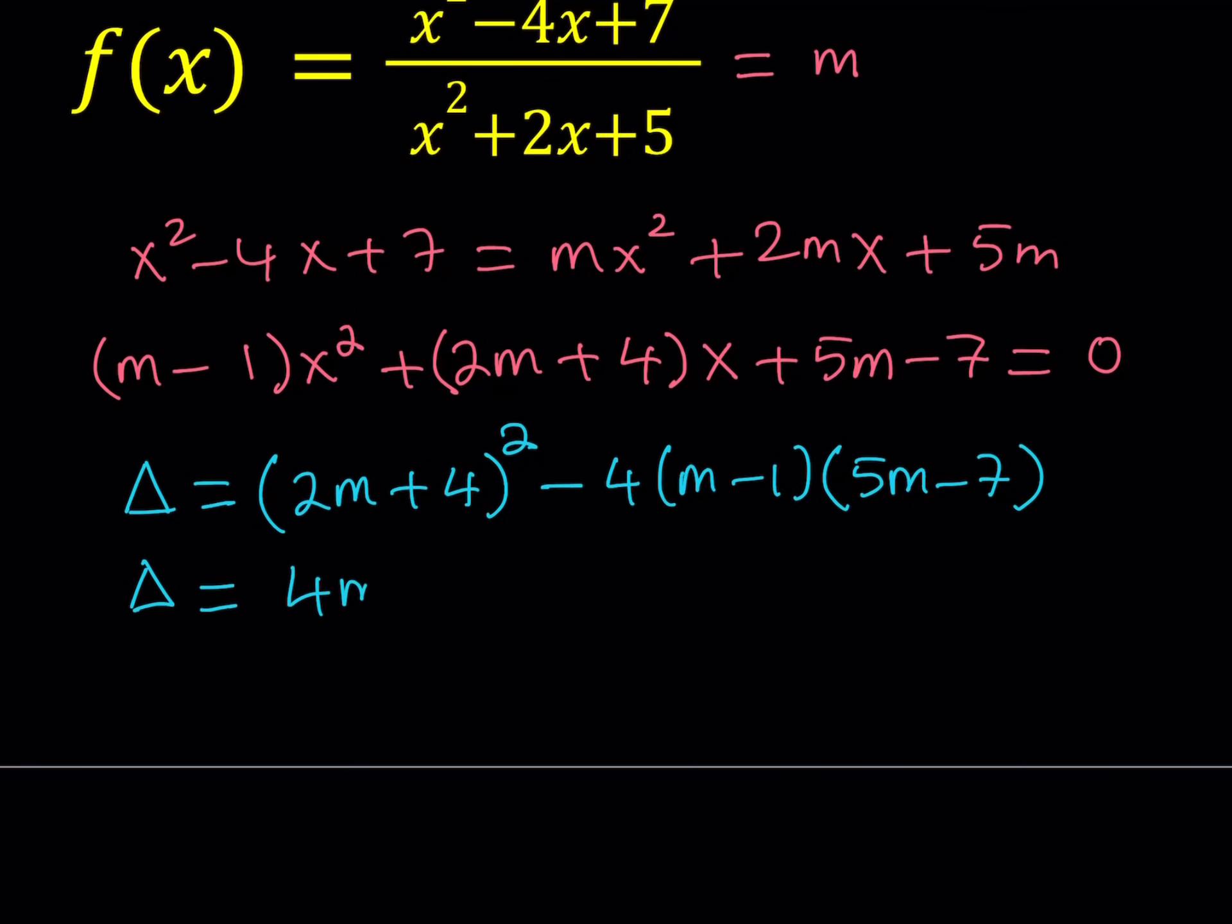This is going to be 4m squared plus 16m plus 16. And then this is going to be negative 4 times the quantity, 5m squared. So I should be getting negative 7m and negative 5m, which is going to give me negative 12m plus 7. Let's go ahead and distribute this and simplify.